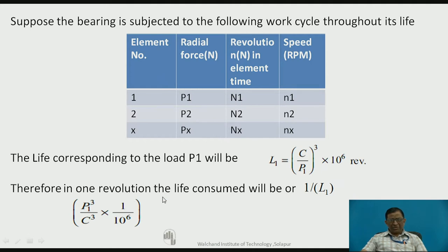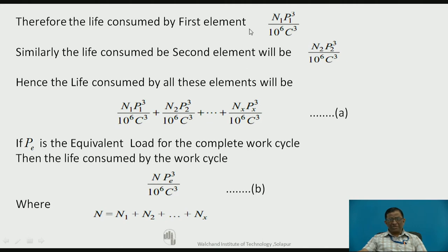In one revolution the life consumed is 1/L1, which is equivalent to P1³/(C³ × 10⁶). So for the first element where the bearing actually completes N1 revolutions, the life consumed by the first element is N1·P1³ / (10⁶ · C³). This is the relationship for the first element when load P1 is acting and N1 revolutions are completed.